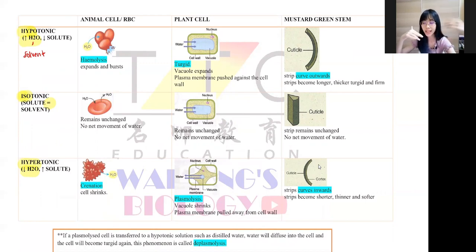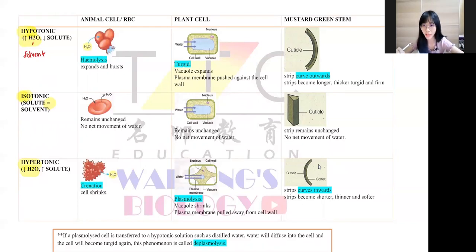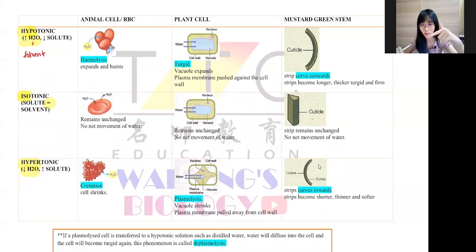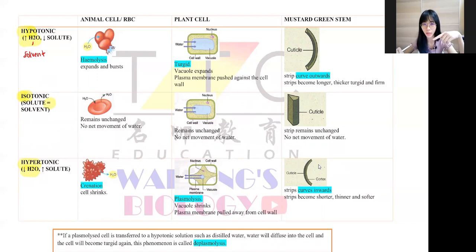We're going to start from the first one, which is animal cell. The animal cell example will be red blood cell. They give you two or three different diagrams and ask you to explain what happened to the red blood cell. We have to know one fact: more water to lesser water — anything that has more water will always diffuse into lesser water.